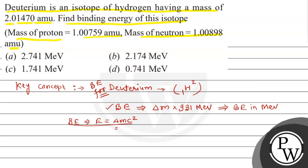Let's see the solution. Our deuterium is 1H2, so what is it made of? One neutron and one proton.